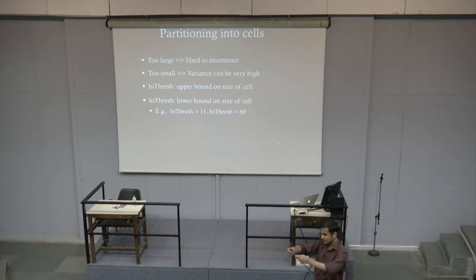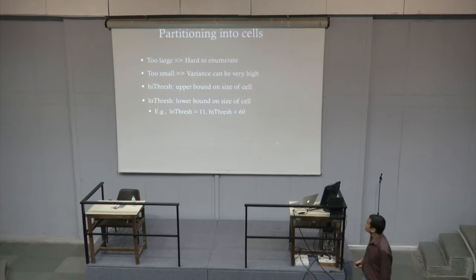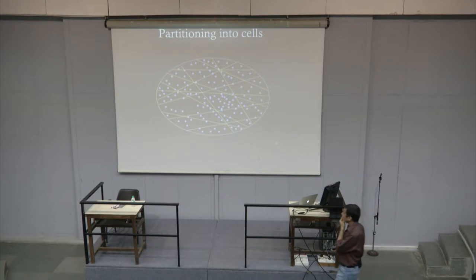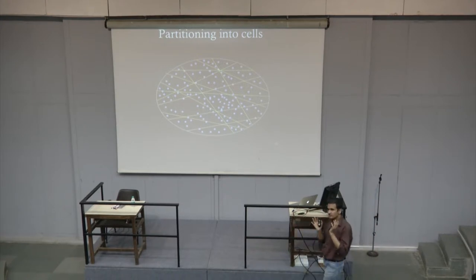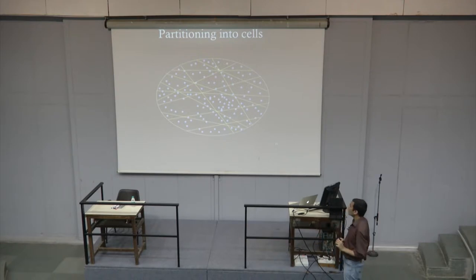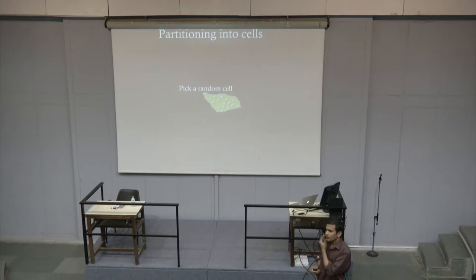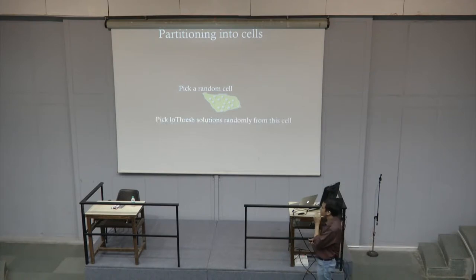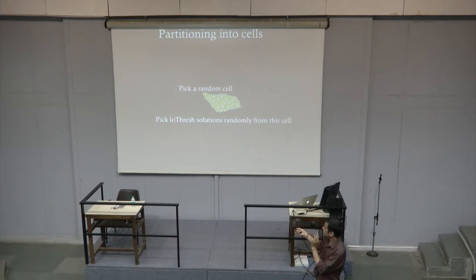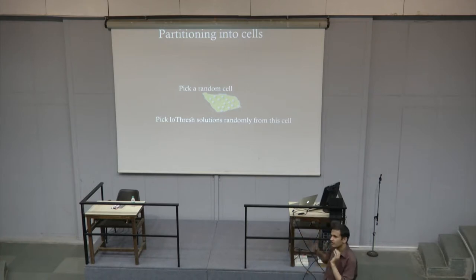Once we have this partition, we can pick a random cell. Since it does not have too many satisfying assignments, we can enumerate all of them and pick solutions randomly. We assume access to a SAT solver at the backend. We can repeatedly ask the SAT solver to give one more satisfying assignment — the solver returns one solution at a time, but you can ask for an assignment different from the ones already found.